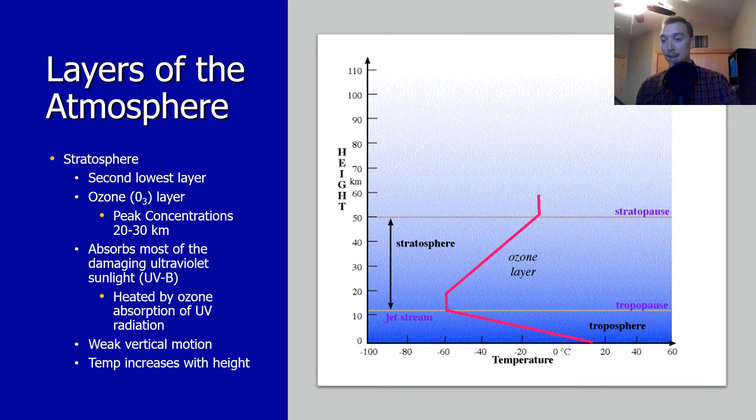Temperature increases with height, opposite to that of the troposphere. The temperature rises from an average of about negative 60 degrees Celsius at the tropopause to a maximum of about 15 degrees Celsius at the stratopause due to the absorption of ultraviolet radiation. The increasing temperature also makes it a calm layer, unlike the troposphere, with movement of gases being quite slow here.